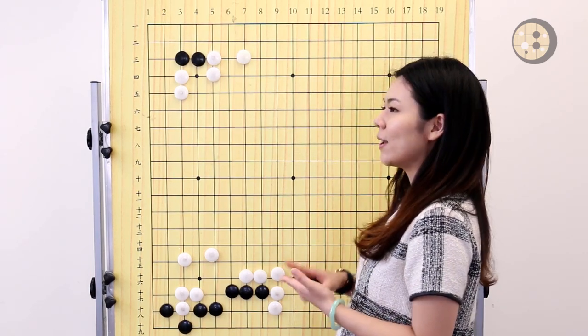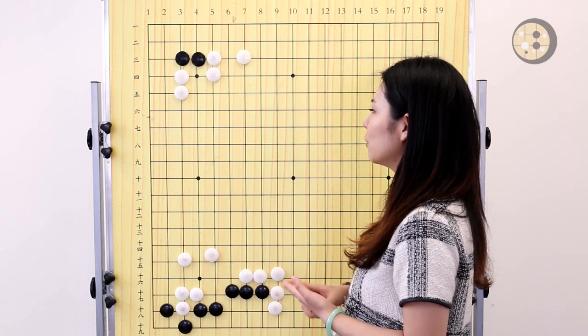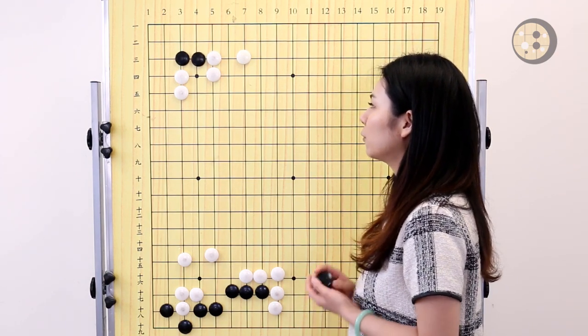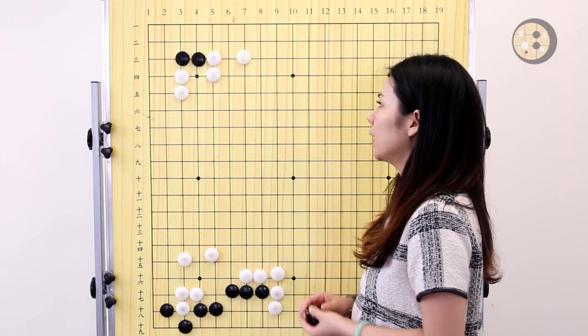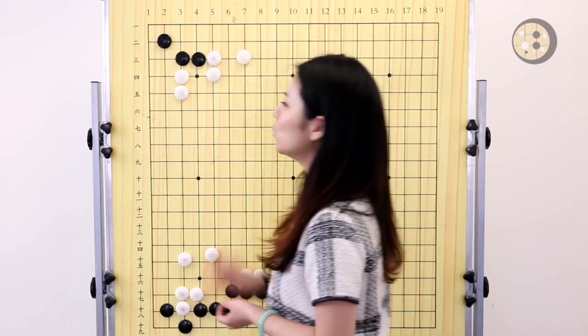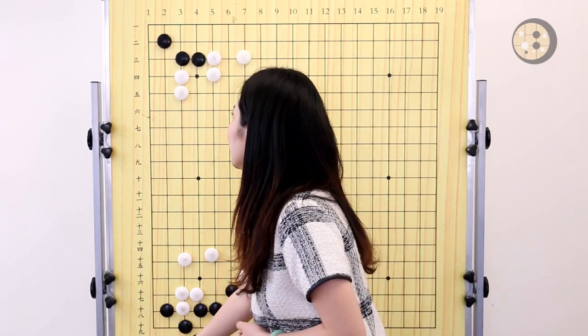And the code is incorrect. So we're going to help black to make it completely alive. Where is the move? The first move, the vital point. We need to take the vital point by playing the two-two point here.